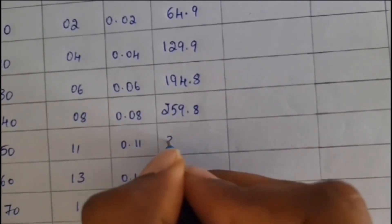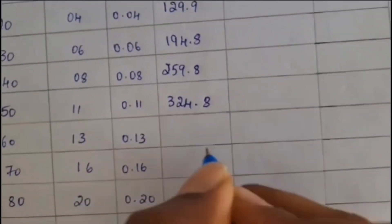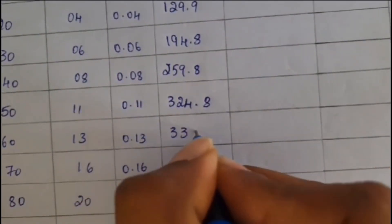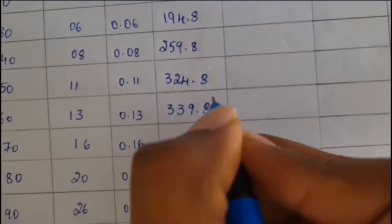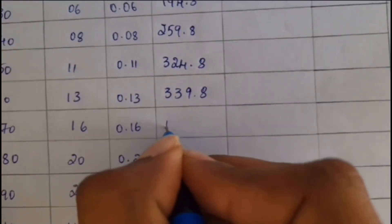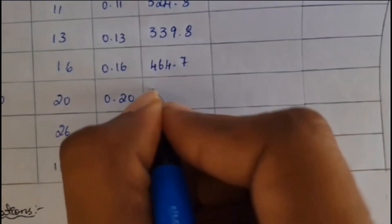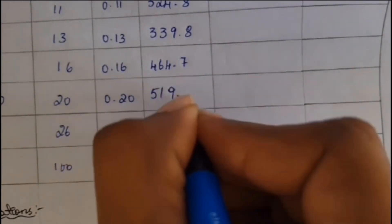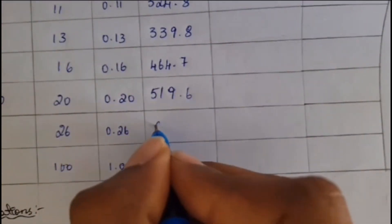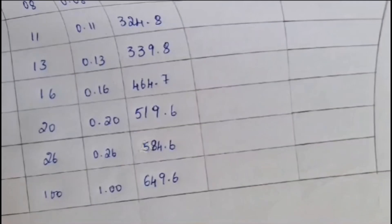For sixth one, I will be getting as 339.8. For seventh reading, I will be getting as 464.7. For eighth reading, I will be getting as 519.6. For ninth one, that is 584.6. Don't make confusion. For tenth one, it is 649.6.